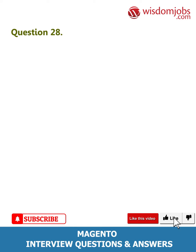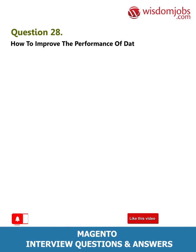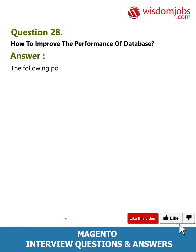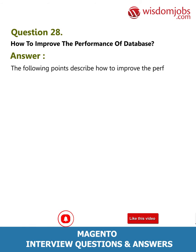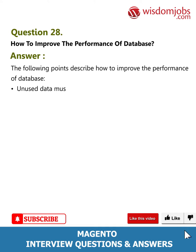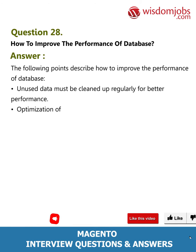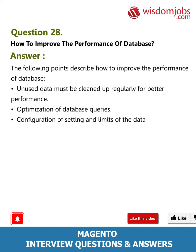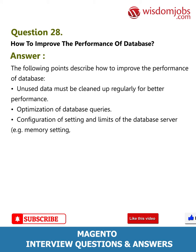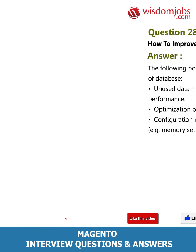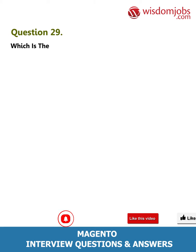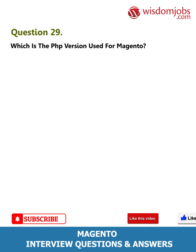Question 28: How to improve the performance of a database? Answer: Unused data must be cleaned up regularly for better performance. Optimize database queries and configure settings and limits of the database server, for example memory settings, query cache, and sort buffer. Question 29: Which PHP version is used for Magento? Answer: PHP 5.4 and above.